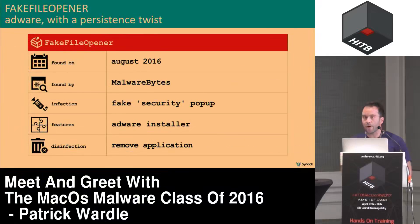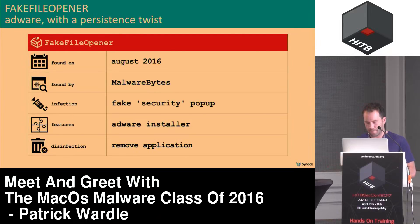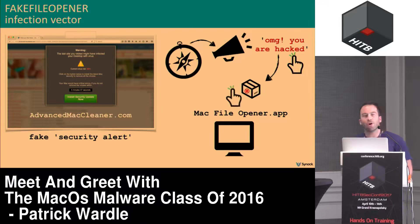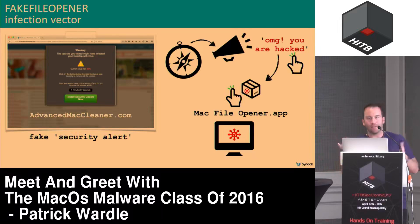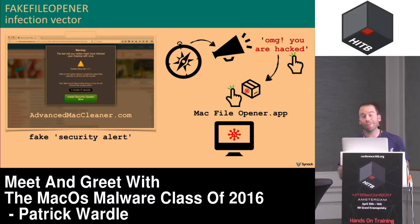The next piece of malware is adware called Fake File Opener, discovered at the end of last summer by Malwarebytes. It's pretty boring except it has a rather interesting persistence mechanism. Fake File Opener is installed alongside other pieces of Mac malware when a user is tricked by a fake security popup, in this case distributed via advancedmaccleaner.com. The site pops up saying your computer's infected, please download and run this application to clean your system — and some percentage of users fall for this and infect themselves.